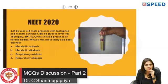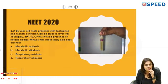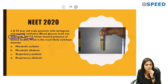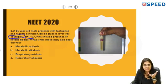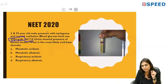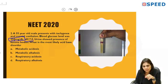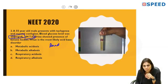A 55-year-old male presents with tachypnea and mental confusion. Blood glucose was 350 mg/dL — that is hyperglycemia. pH is 7.0. Is it normal or abnormal? Many students said it's normal, confusing it with neutral pH. However, normal arterial blood pH is 7.4, so a pH of 7.0 represents a decrease — there is acidosis.